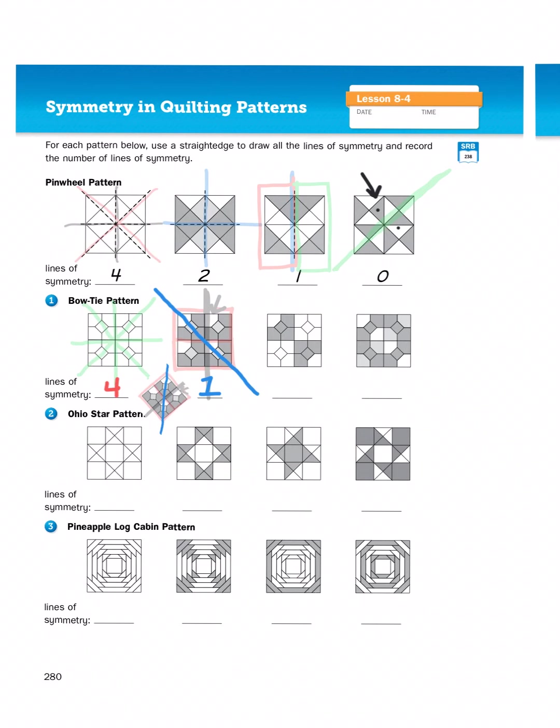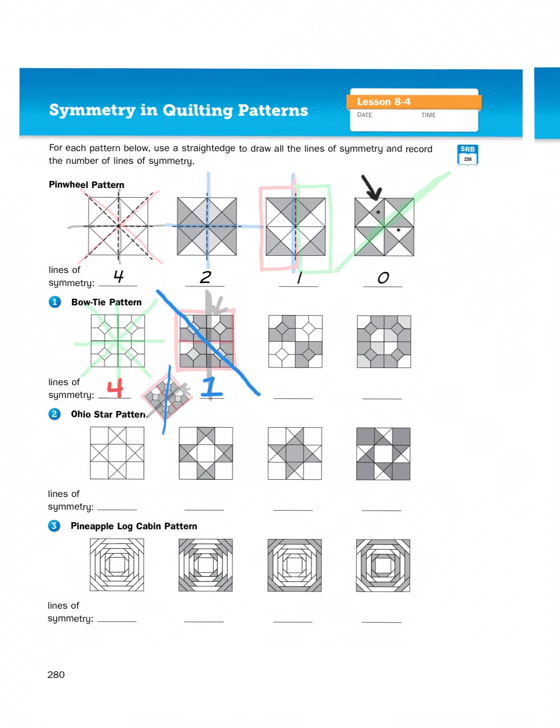So your job is to go through each of these patterns and ask yourself, if I were to fold this in half, would both sides of that fold look identical or look like mirror images of each other or look nothing alike? That's how I determine lines of symmetry.